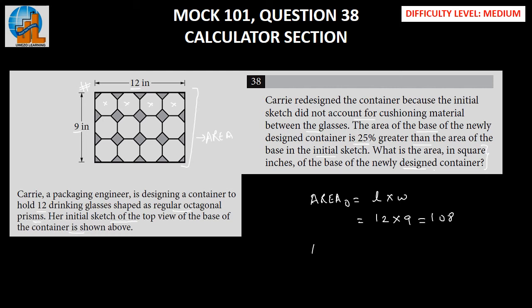Now, as we know, the area of the new container is 25% greater than the area of the old container. Let's go back to the formula that we studied in one of the percentage questions. Since we have an increase here, what we will do is 100 plus 25 upon 100 into 108. This will be the area of the new container because the area is increasing by 25%.